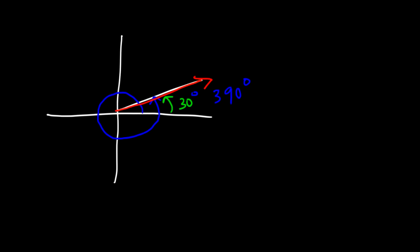So anytime an angle differs by 360, there will always be coterminal angles. Notice that if you add 30 with 360, this will give you the coterminal angle 390.